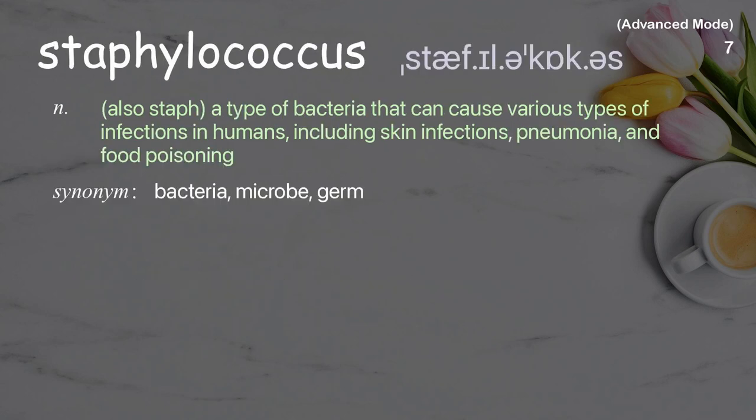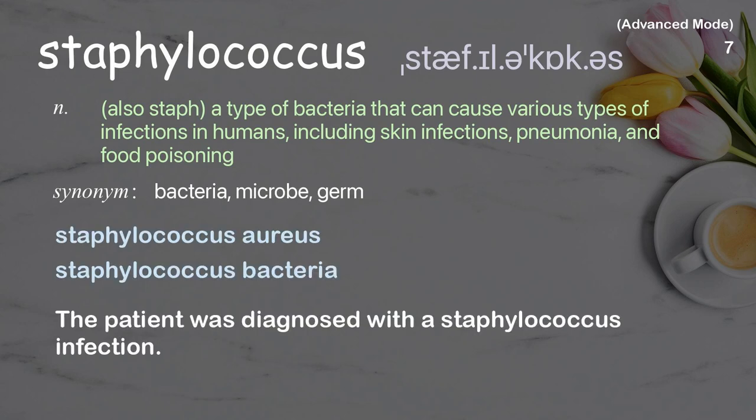Staphylococcus, also staph: a type of bacteria that can cause various types of infections in humans, including skin infections, pneumonia, and food poisoning. Examples: Staphylococcus aureus. Staphylococcus bacteria. The patient was diagnosed with a Staphylococcus infection.